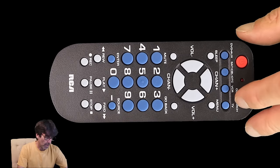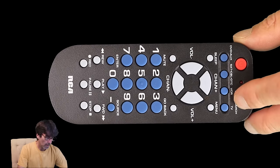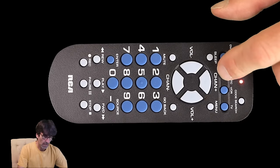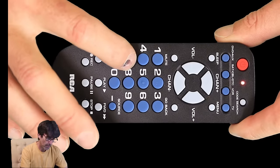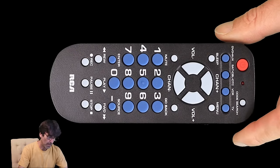So, same as before, push the code search button. This time we're using this one. And for dish network, it's 0775. There it is.